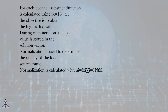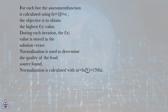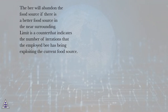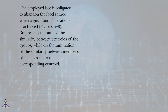For each bee, the assessment function is calculated using f(x) = 1 / (beta + alpha), and the objective is to obtain the highest f(x) value. During each iteration, the f(x) value is stored in the solution vector. Normalization is used to determine the quality of the food source found, calculated as m-i = x-i divided by the sum of all x-i. The bee will abandon the food source if there is a better food source in the surrounding area. The limit counter indicates the number of iterations the employed bee has been exploiting the current food source, and the employed bee is obligated to abandon it when that limit is reached, as shown in figures 6 to 8.